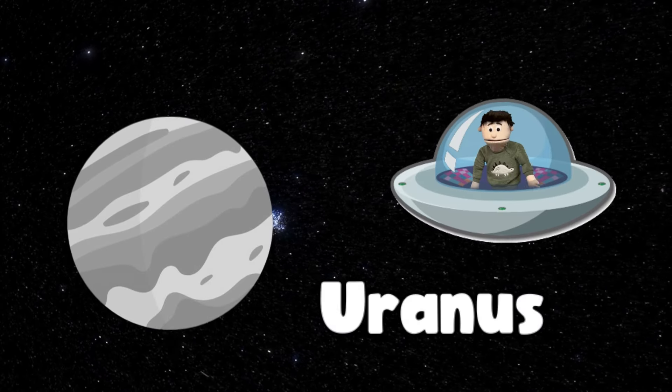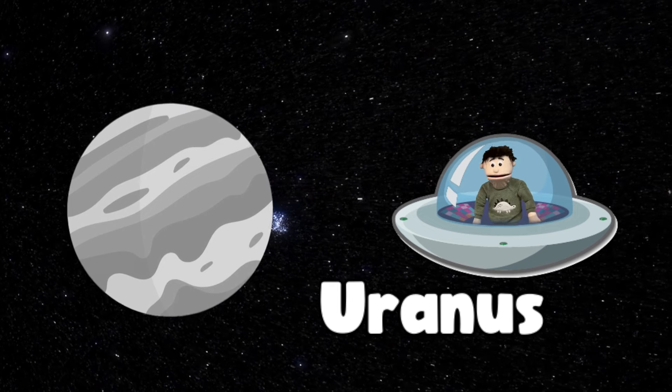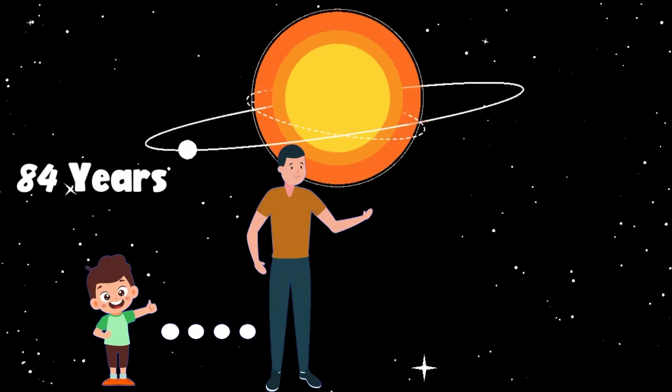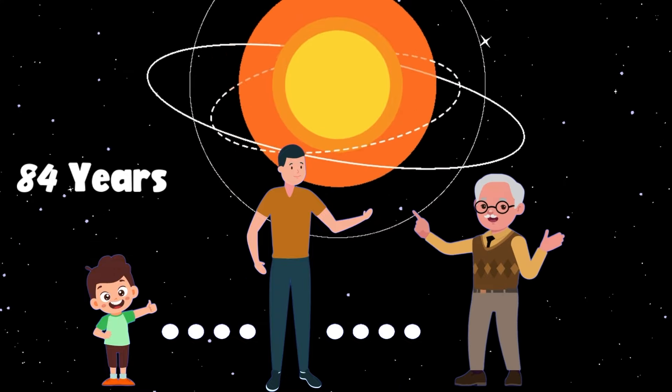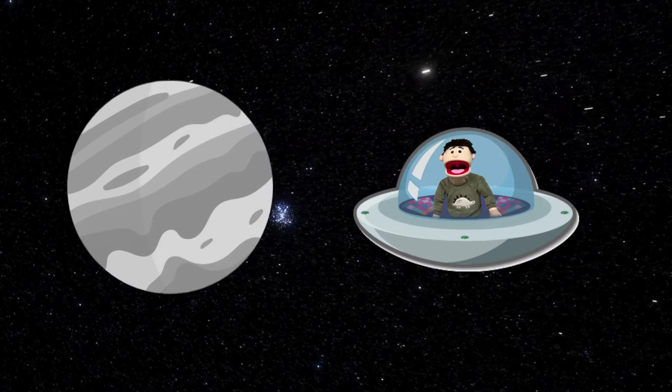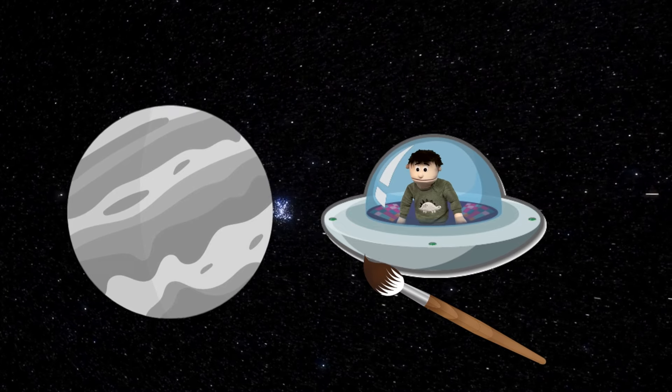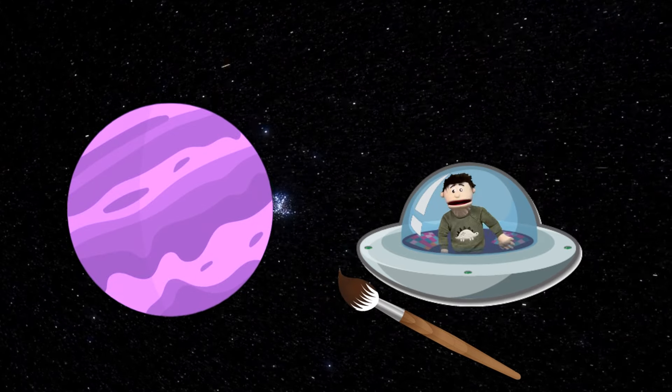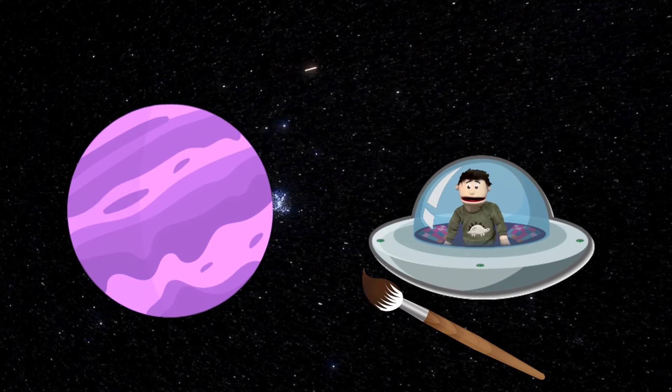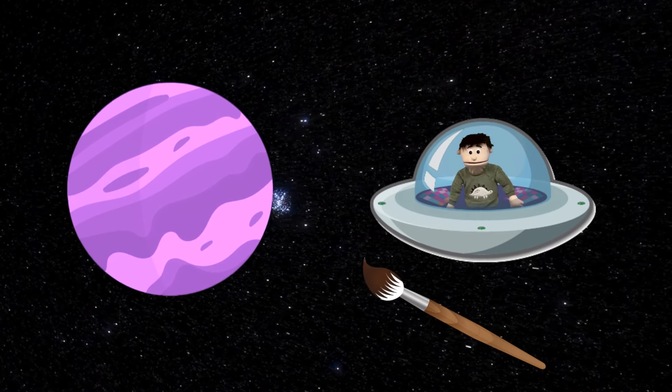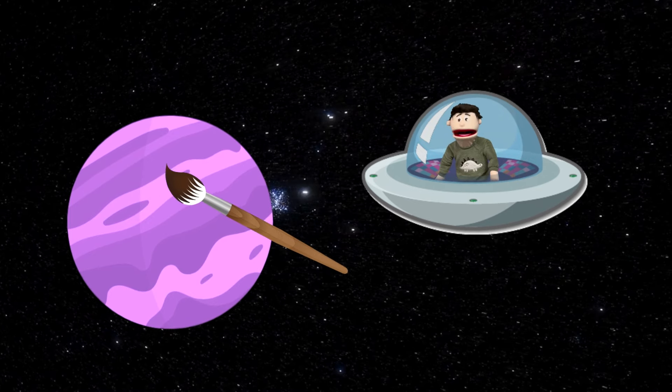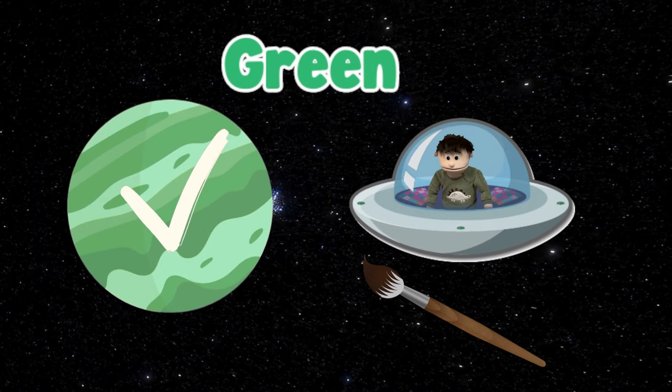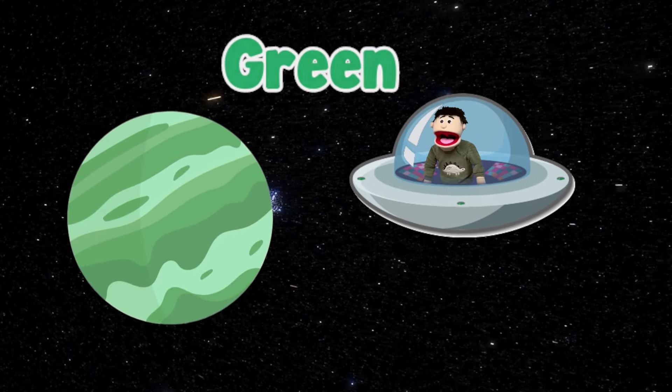This planet is called Uranus! Guess a really cool fact that I just found out! It takes 84 years to rotate around the Sun once! Do you know what color that Uranus is? Is it purple? No, it's not purple! That was a good guess though! What about green? Yeah, you're right, we got it! Second try only this time! Good guess!